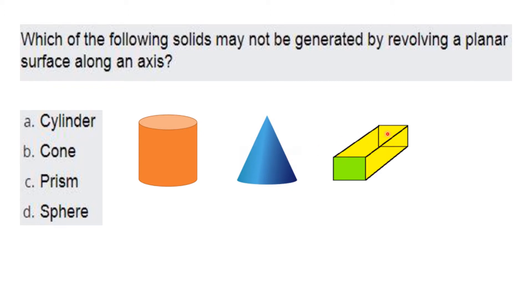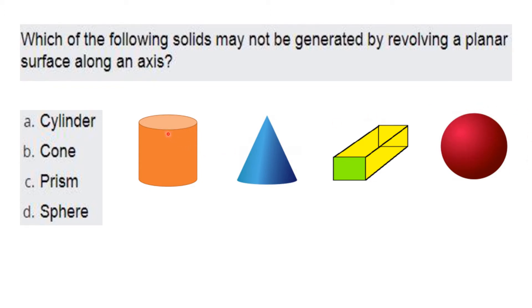The prism is not curved — it has flat surfaces. When we say a sphere is curved all around, it can also be generated by revolving. So cylinder, cone, and sphere can all be generated by revolving a planar surface. The prism cannot. So option C is the right answer.